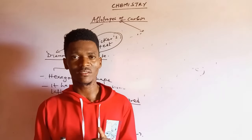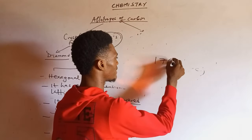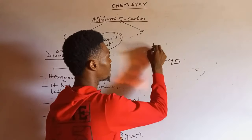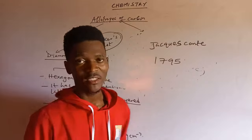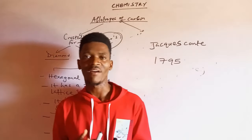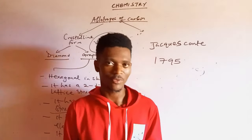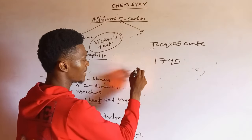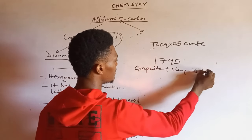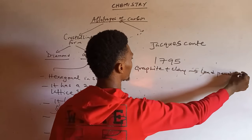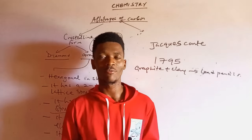Looking at the applications of graphite: in the year 1795, a French painter named Jacques Conte mixed graphite with clay and was able to obtain lead — and that's the lead that is used in pencils. So a mixture of graphite and clay is used in the making of pencil lead.